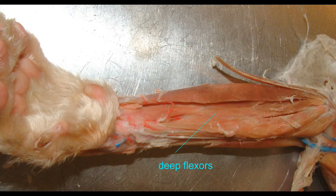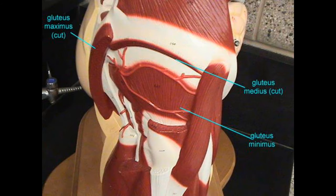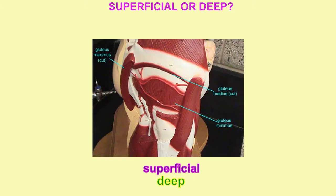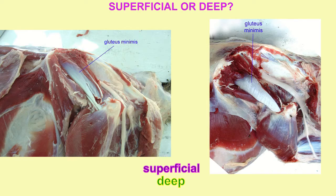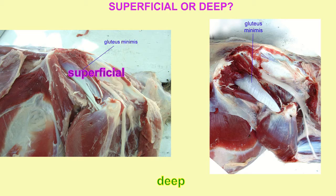For example, in the hip region, the gluteus maximus is superficial. Once removed, one can fully see the gluteus medius, which is deep to the gluteus maximus. If one were then to reflect the gluteus medius, one could observe the gluteus minimus, which is deeper still.